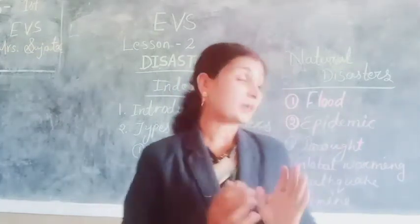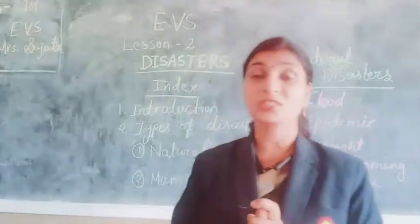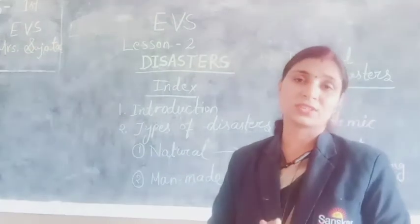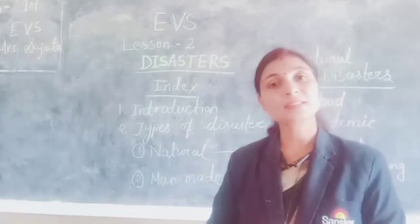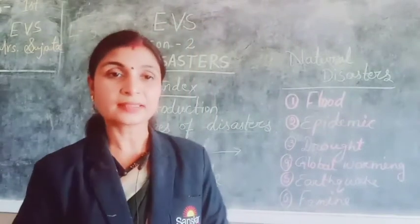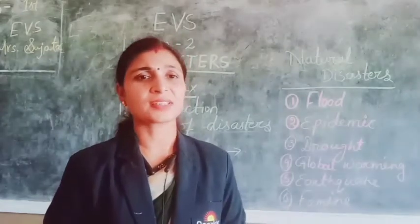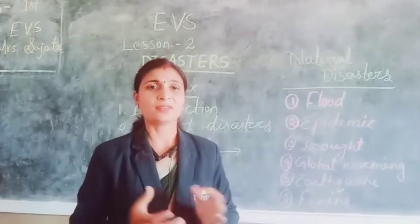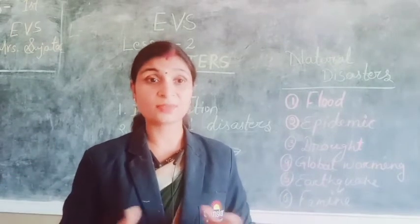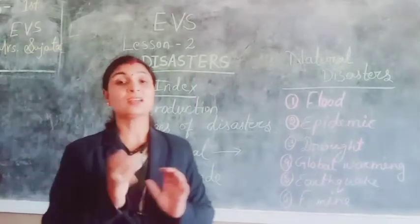Let us go to our book also, children. See the book properly. Floods are caused due to heavy rain — jab bohut hi rain aata hai, tab floods aata hai — causing a great flow of water in rivers and on land. These are called flood.